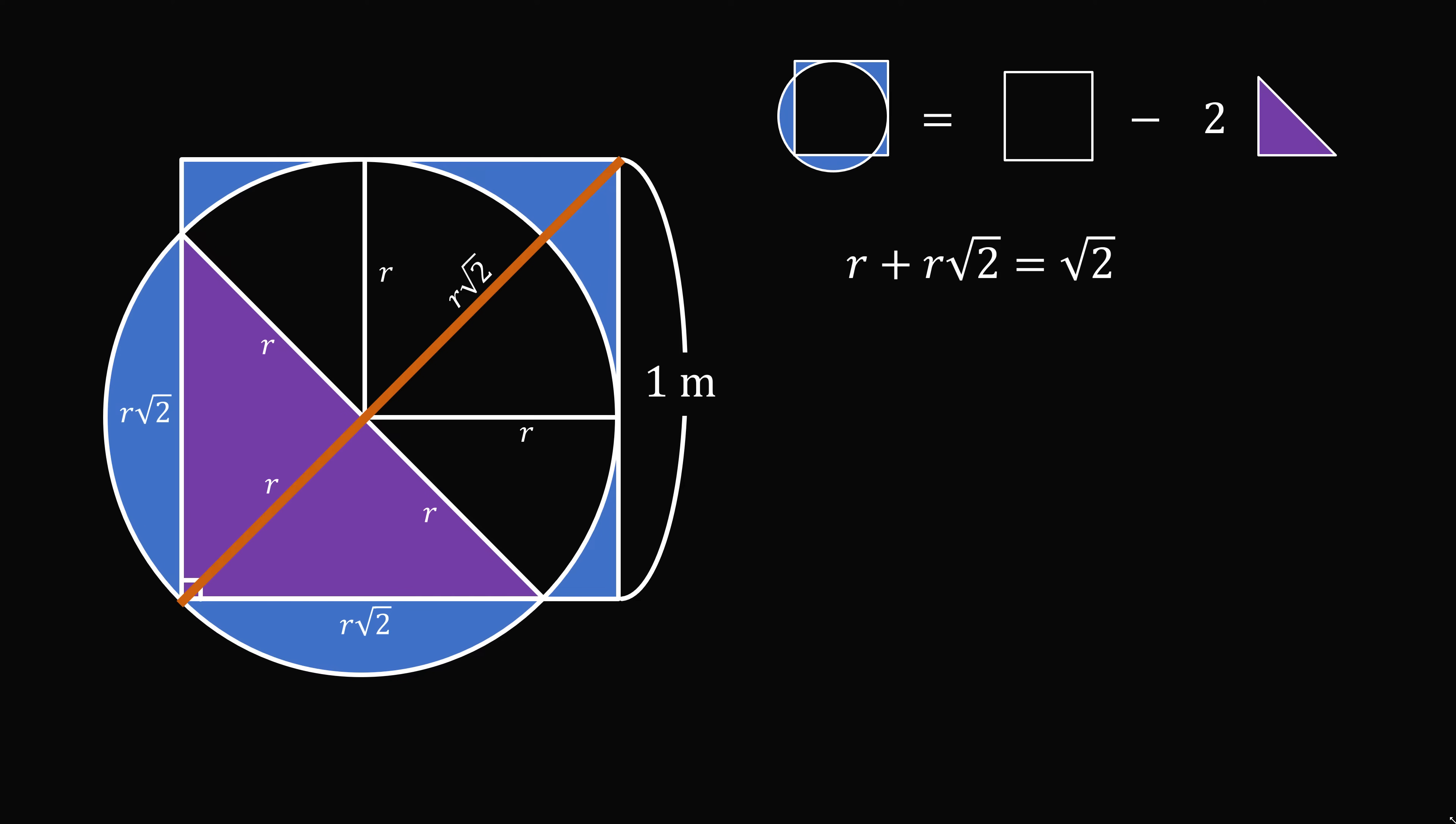So we have r plus r root two is equal to root two. We can carefully solve this equation for r. Now, we can multiply by the conjugate to simplify a little more. So we get r is equal to two minus root two. We're almost there.